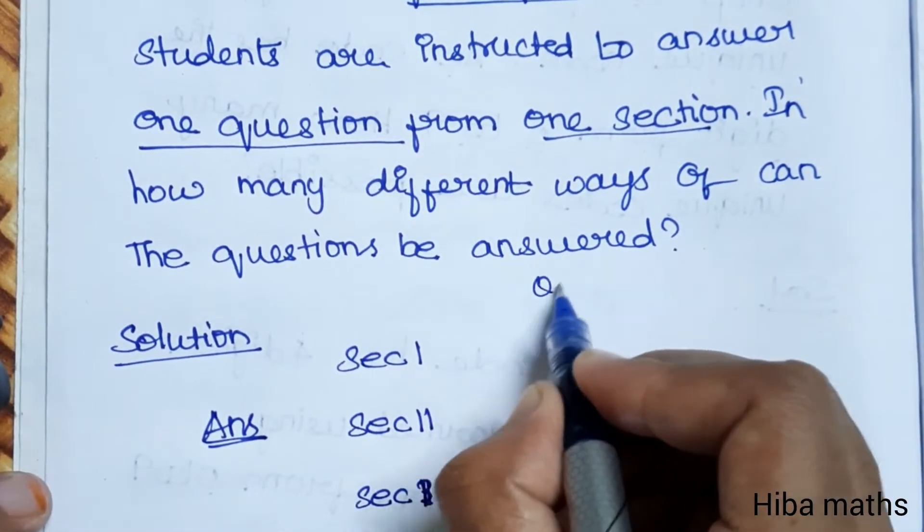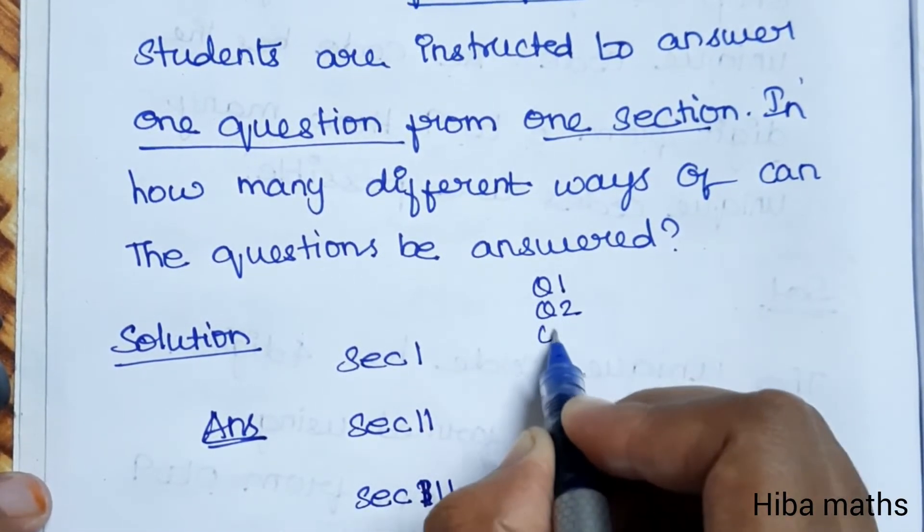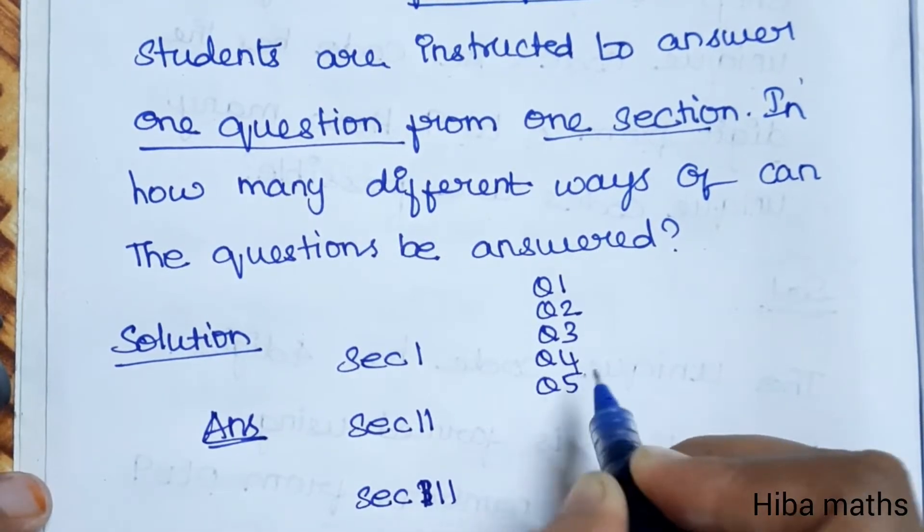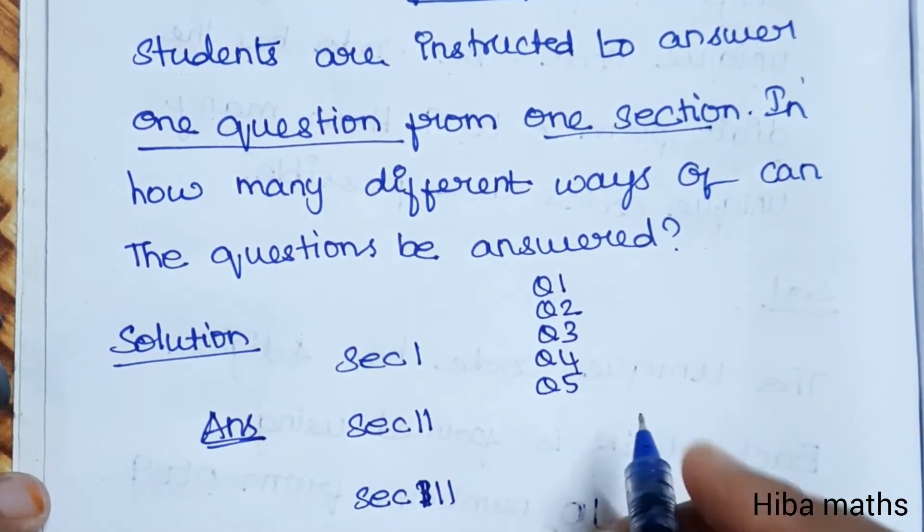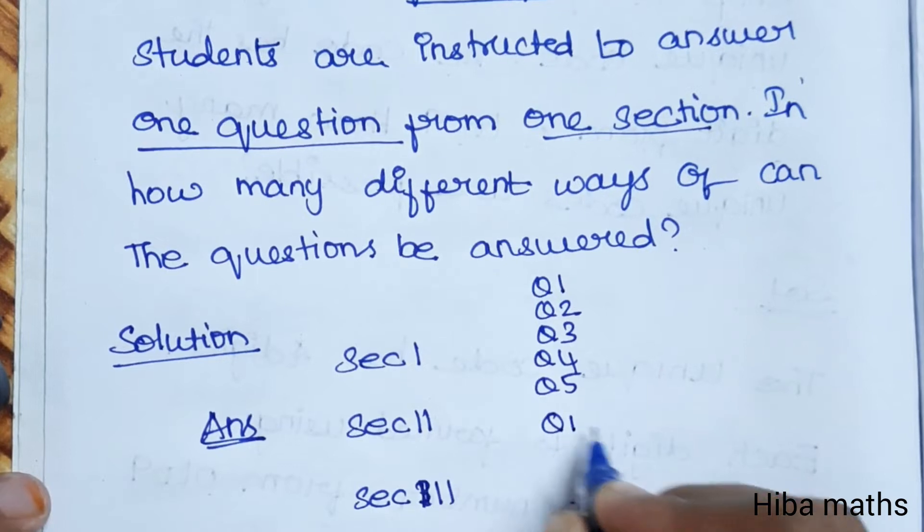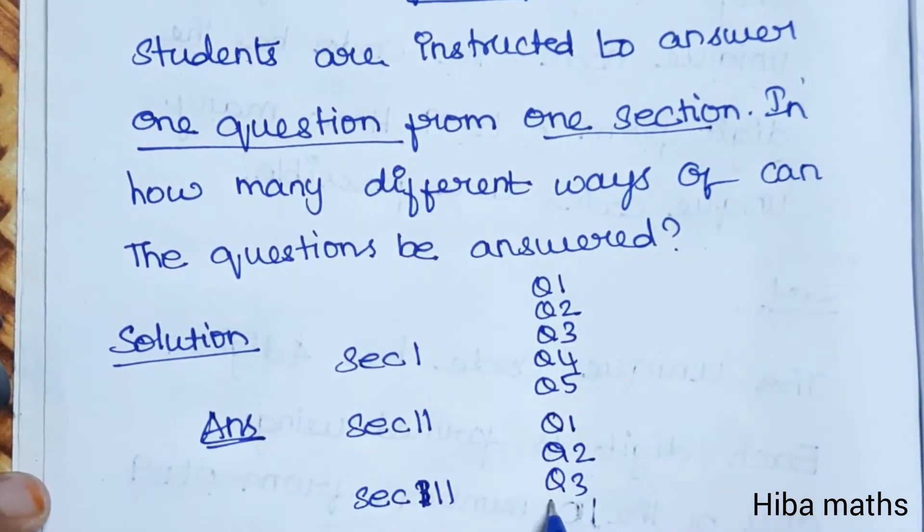In the first section, how many questions are there? Q4, Q5. In the second section, how many questions are there? Q1, Q2, Q3, Q4, Q5.